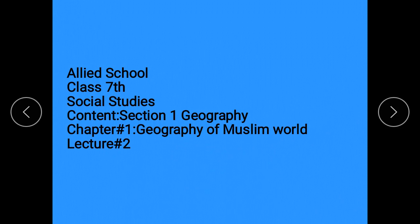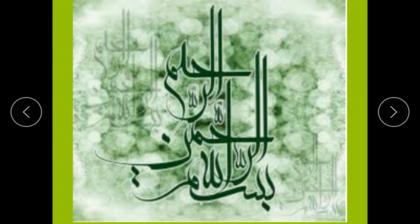Assalamualaikum students of 7th class. This is your lecture number 2 of social studies. The content is section number 1, Geography, and chapter number 1, Geography of the Muslim World. Let's get started. We have completed the reading in the previous lecture. Now we will solve the exercise. Bismillahir Rahmanir Rahim. This is the title of your book. Let's get started.